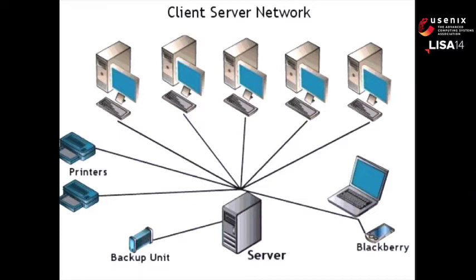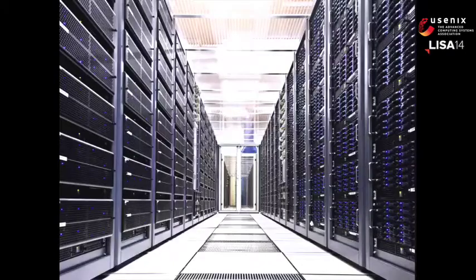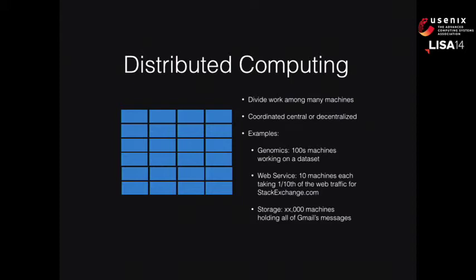Client-server computing was so awesome that these servers started getting bigger and bigger because they were handling more and more users. Eventually they hit too many limits, and vendors discovered they could charge a lot more to the few companies that needed the really big machines. So in the late 90s, computer scientists started talking about distributed computing — taking lots of little machines and distributing the work over them. Genomic systems, for example, have hundreds of machines each taking their part of a dataset, and the combined output is much more powerful than any one computer.